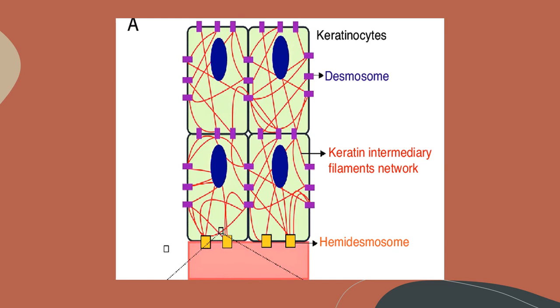This is an image representing the distribution of intermediate filaments within the cells. Here there are four cells which are adjacent to each other. You see some red fibers running across the cells. These are the intermediate filaments. The intermediate filaments run across the cell in various directions and connect the membrane of the nucleus with the membrane of the cell. That way they form a tough resilient structure within the cell preventing the excess stretch of the cells.